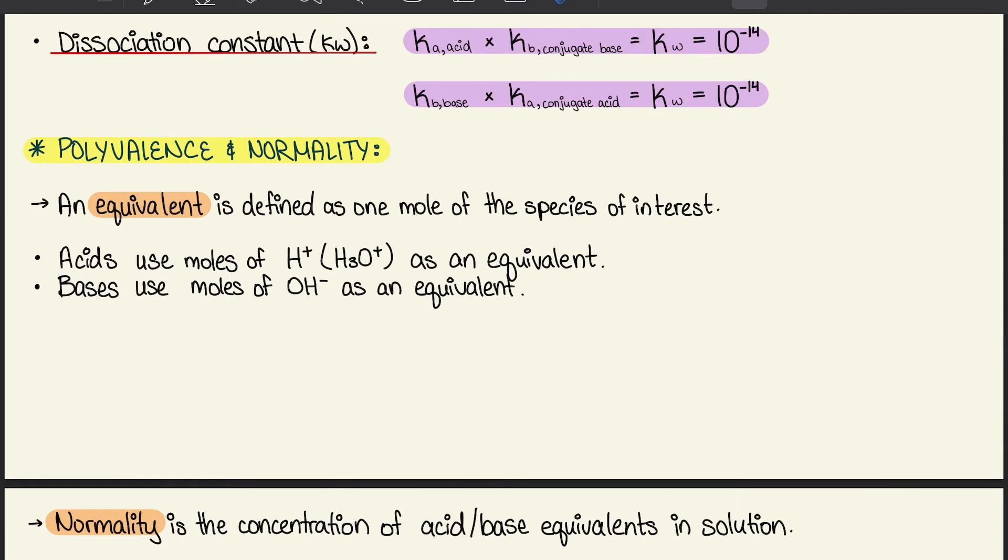The dissociation constant Kw is Ka (your acid) times Kb (conjugate base). That gives you Kw, which equals 10 to the power of negative 14. Remember in the examples above that the base or acid will create the opposite conjugates. For an acid, you'll have a conjugate base, and with a base, you'll have a conjugate acid.